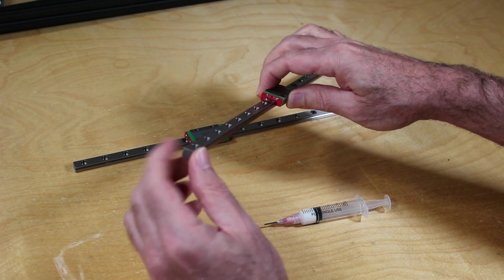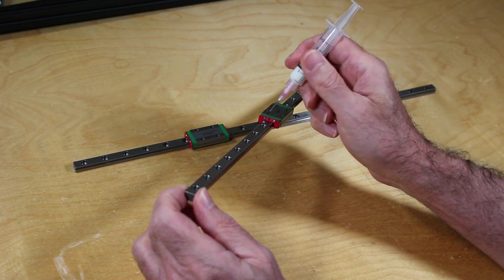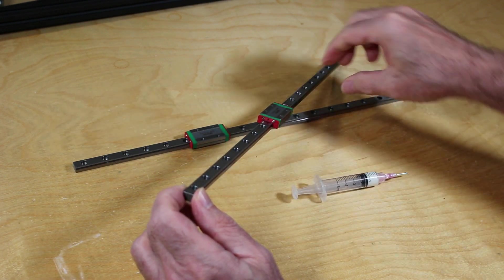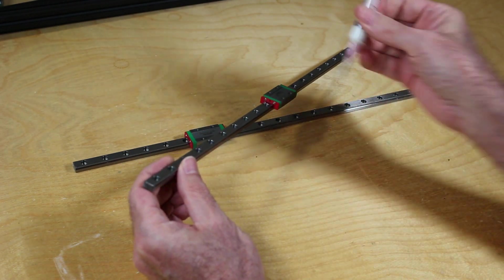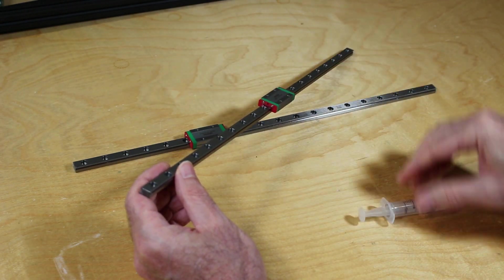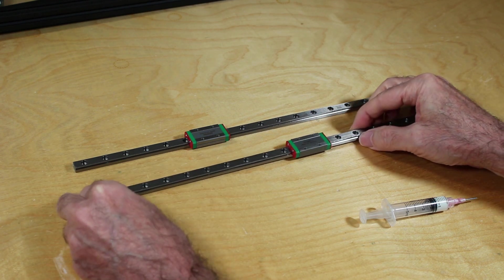To insert the grease, the linear carriages have a small hole. There's actually one on each side, and that is where we will insert the blunt tip needle and insert the grease.